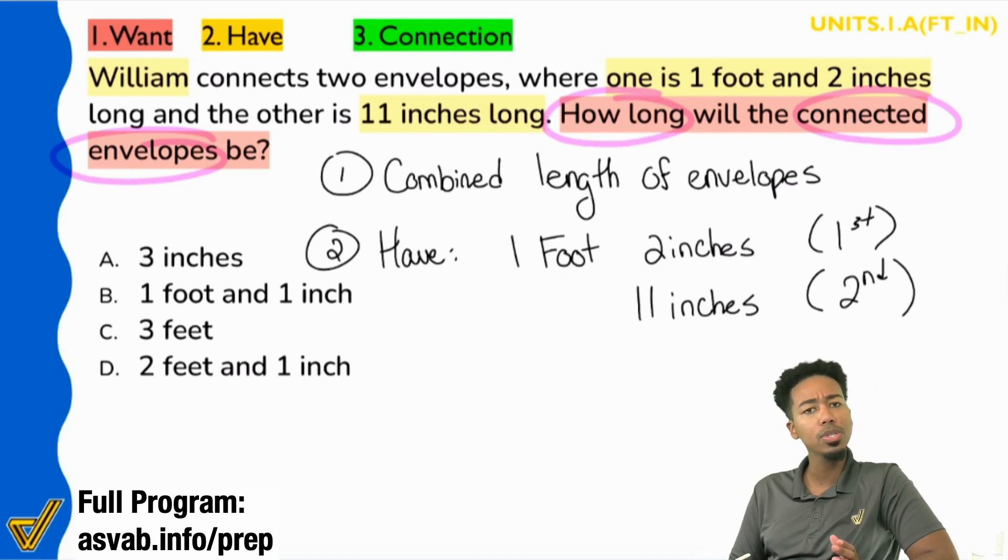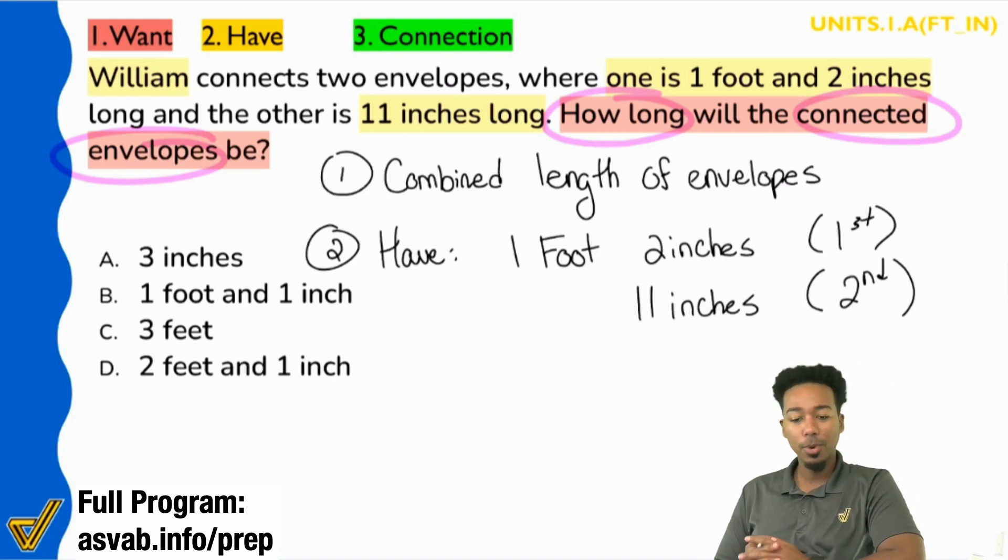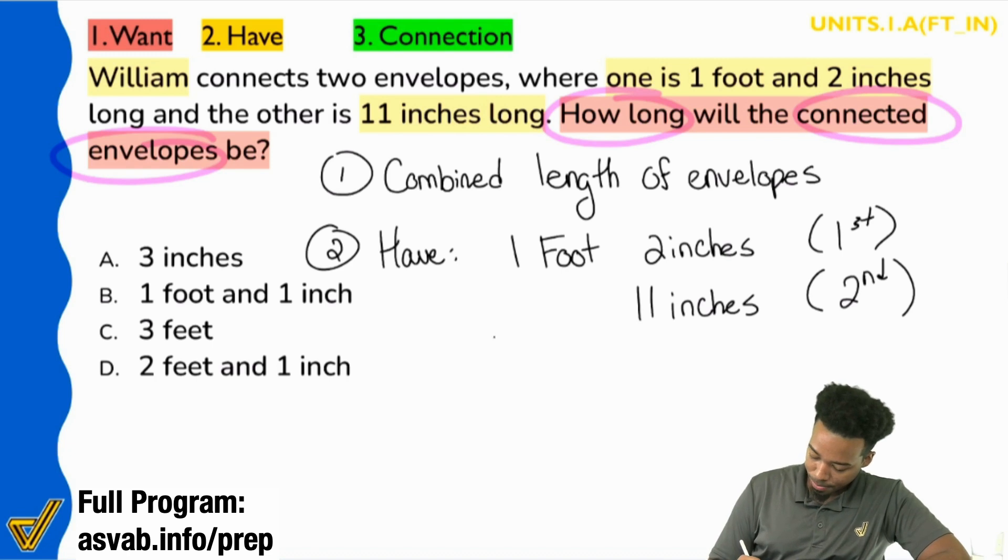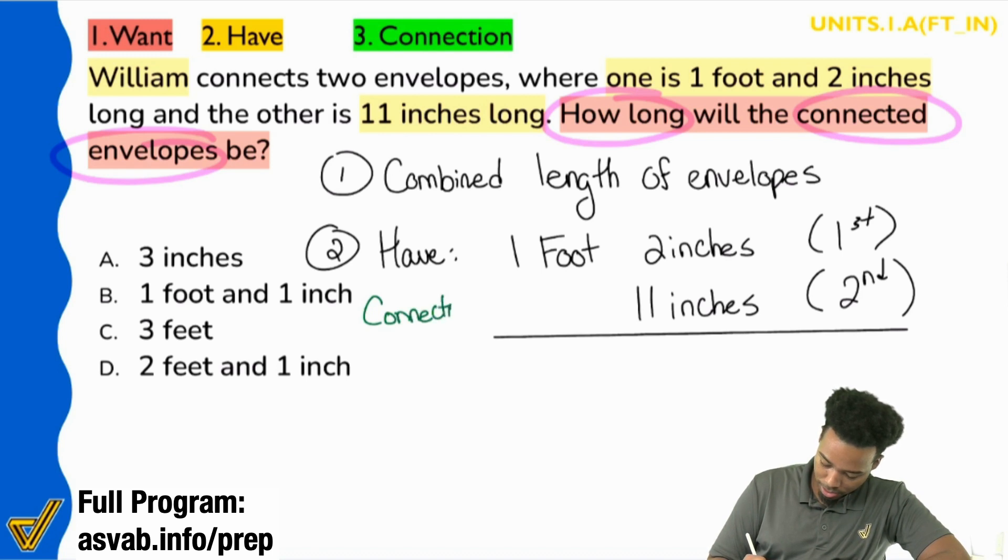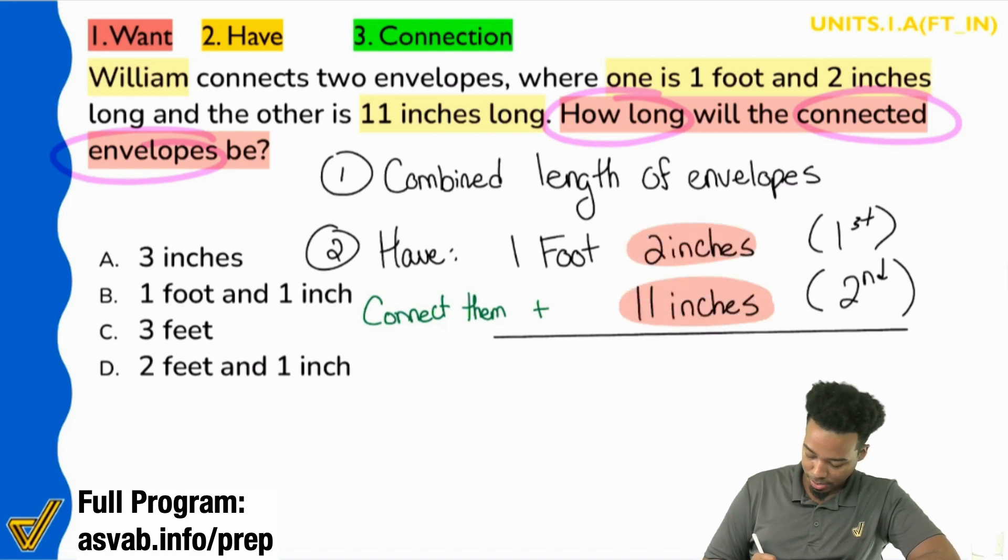And we're trying to connect them. And everybody, what are we supposed to do with those two lengths? What do we say? Combined length? Combining those lengths, connecting them. That means we're going to be adding. Exactly. We're going to be adding that together. So if I do that, let's connect them by adding. So everyone really quick here then.